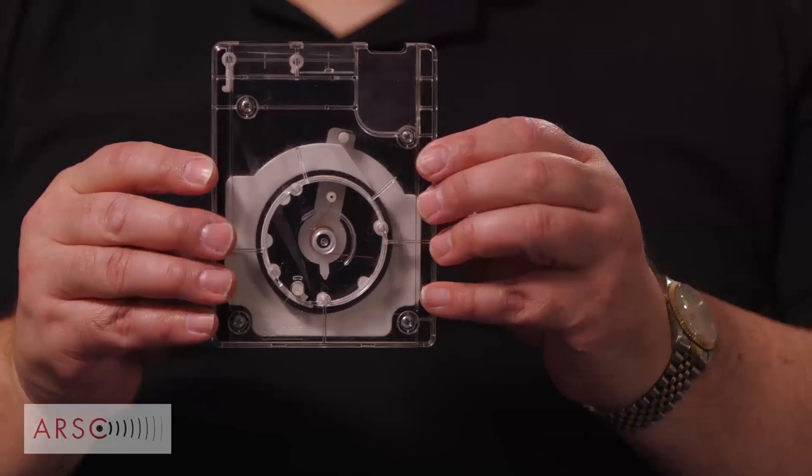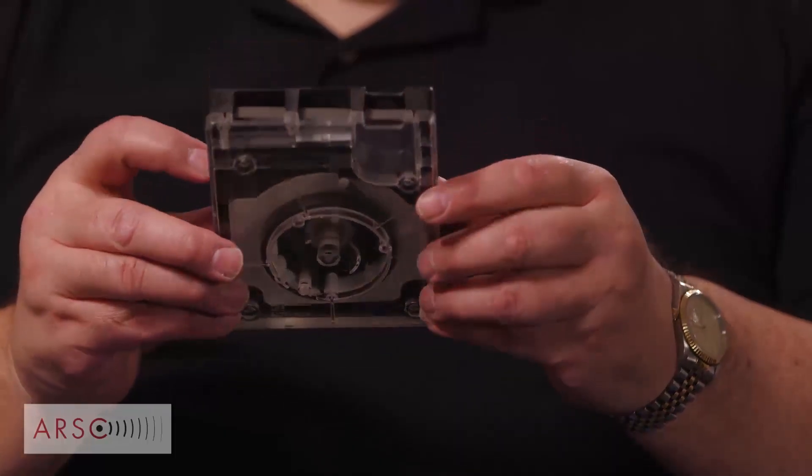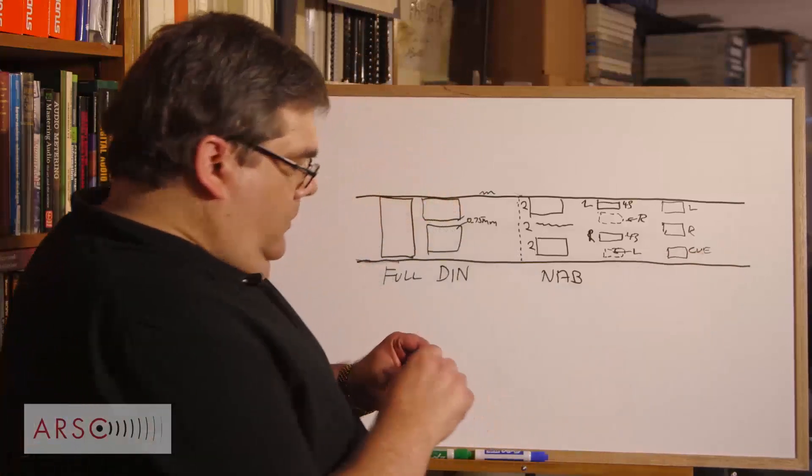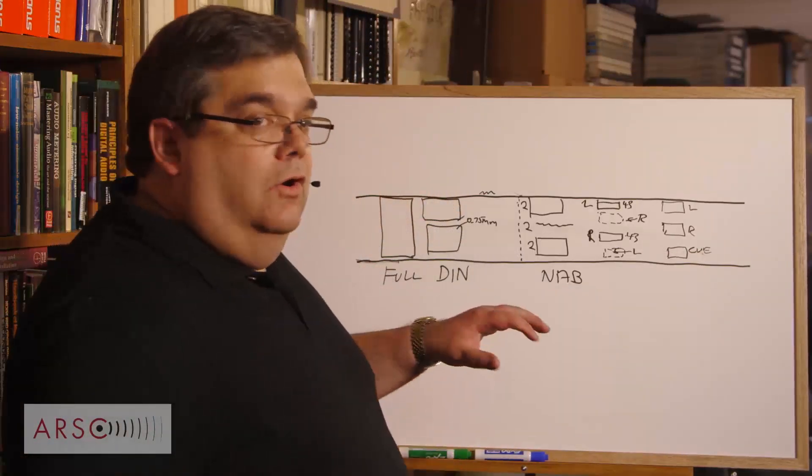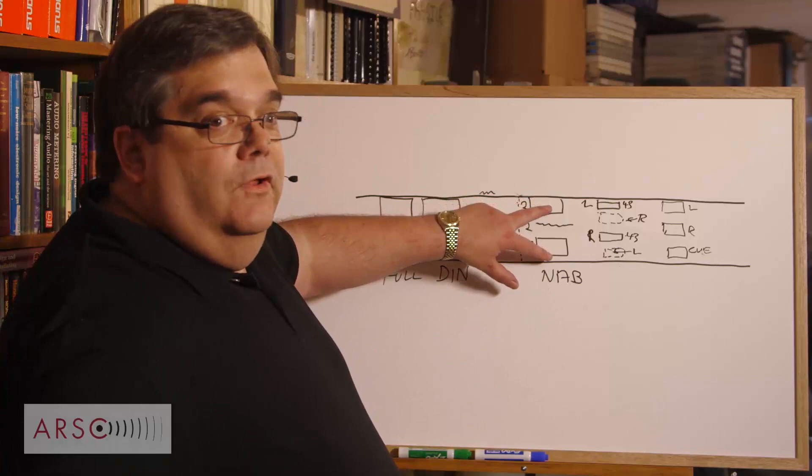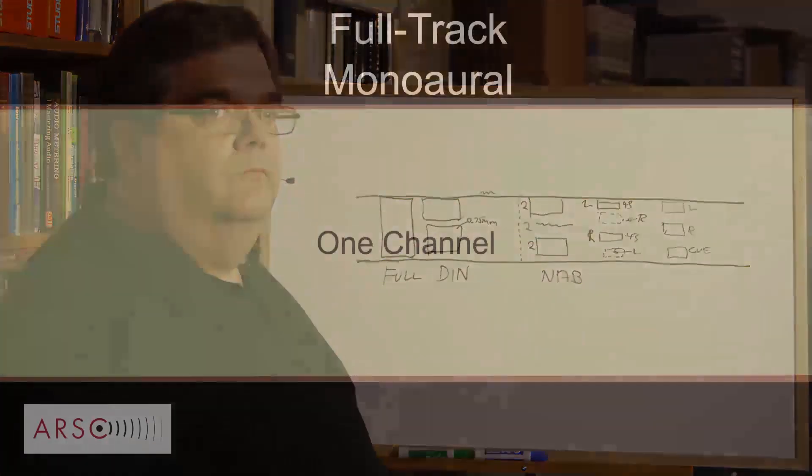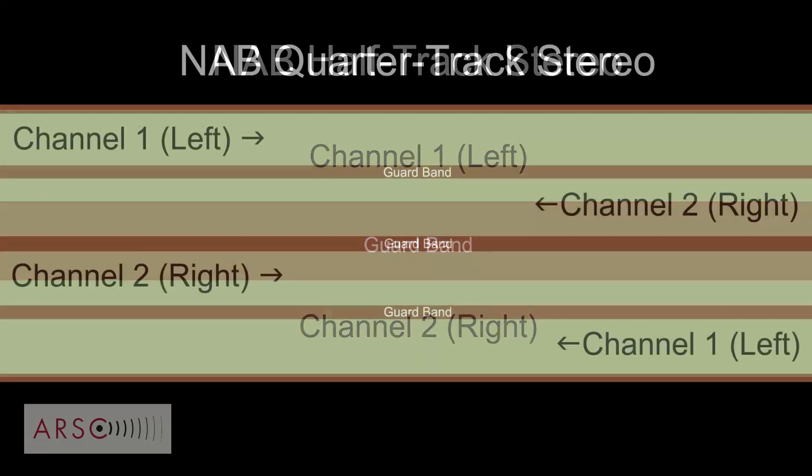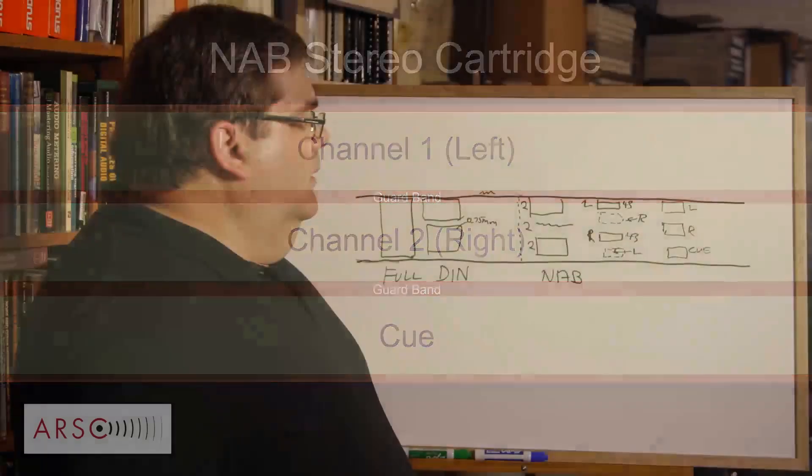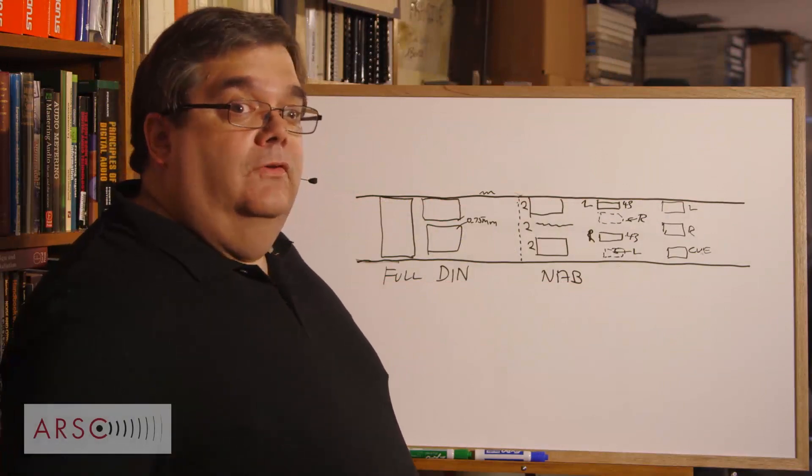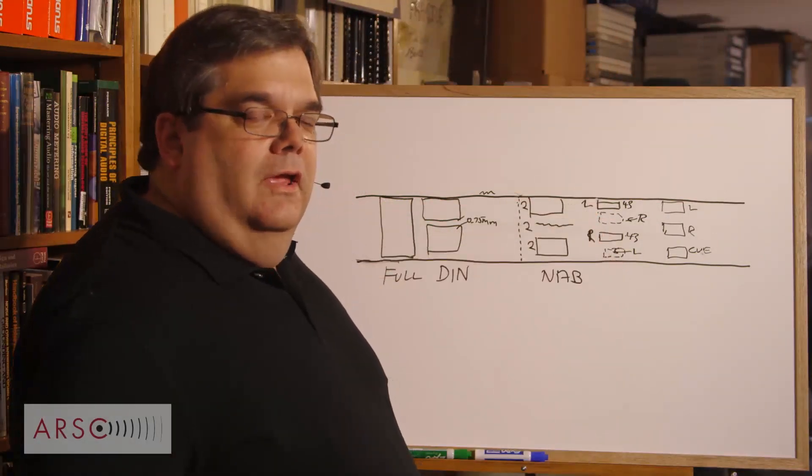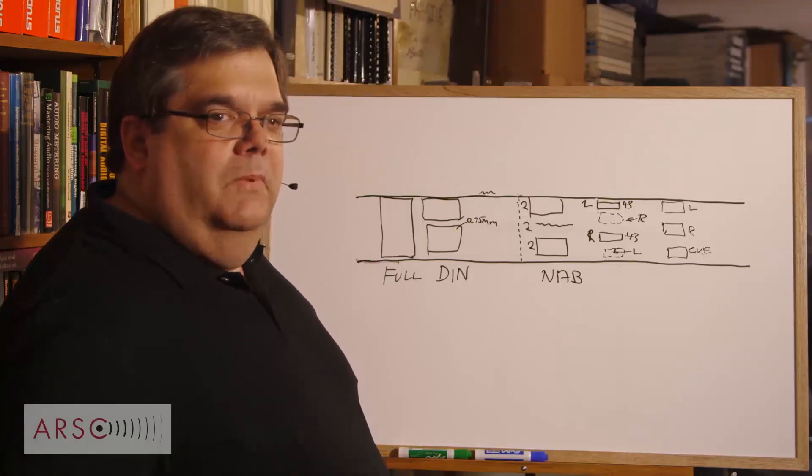And then that became the NAB stereo cartridge format. For the stereo cartridges, you had left, right, and Q. Whereas, in mono cartridges, this same configuration was mono audio and Q. The one further thing that I'm not even going to attempt to draw is this got divided again for the eight-track cartridge, and there were eight 21 mil tracks with associated guard bands.